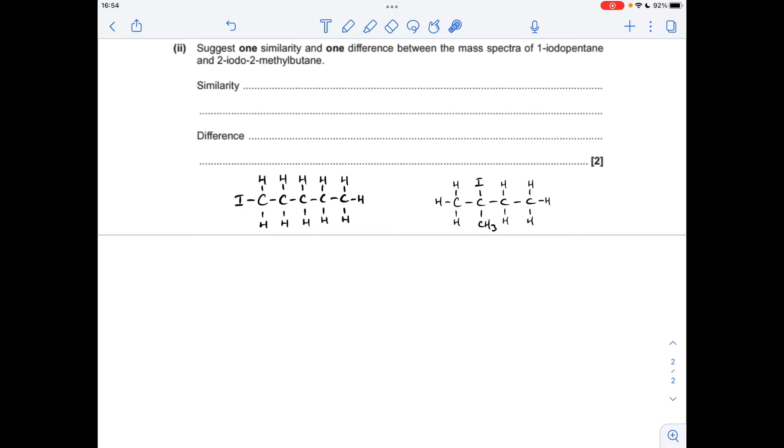So moving on to the last one, we've got to come up with one similarity and one difference between the mass spectra of the two isomers. So obviously the obvious thing to go for is they would both have the same molecular ion peak at that M over Z of 198.